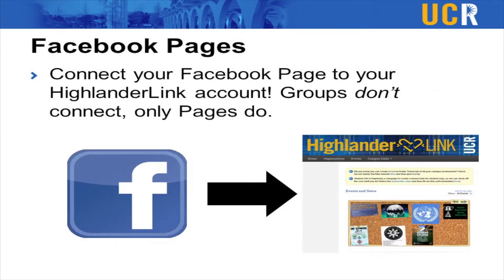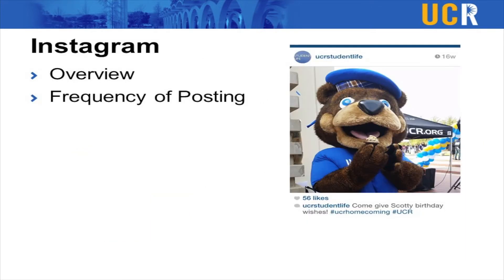A cool thing about creating a Facebook page is that you can connect it directly to your HighlanderLink account. Go to your HighlanderLink profile, edit it, and there's an option to enter your Facebook page URL. If you have a group, you can't do this — only pages can, because they're public. As long as your Facebook page is updated, that info will display on your HighlanderLink page, so people will always be getting up-to-date information.